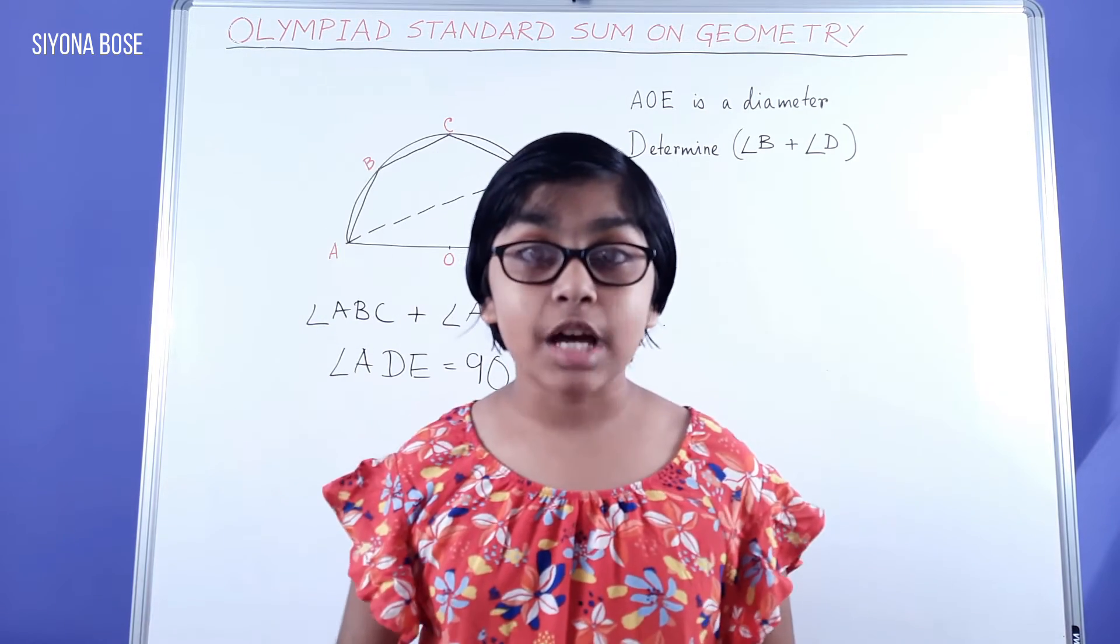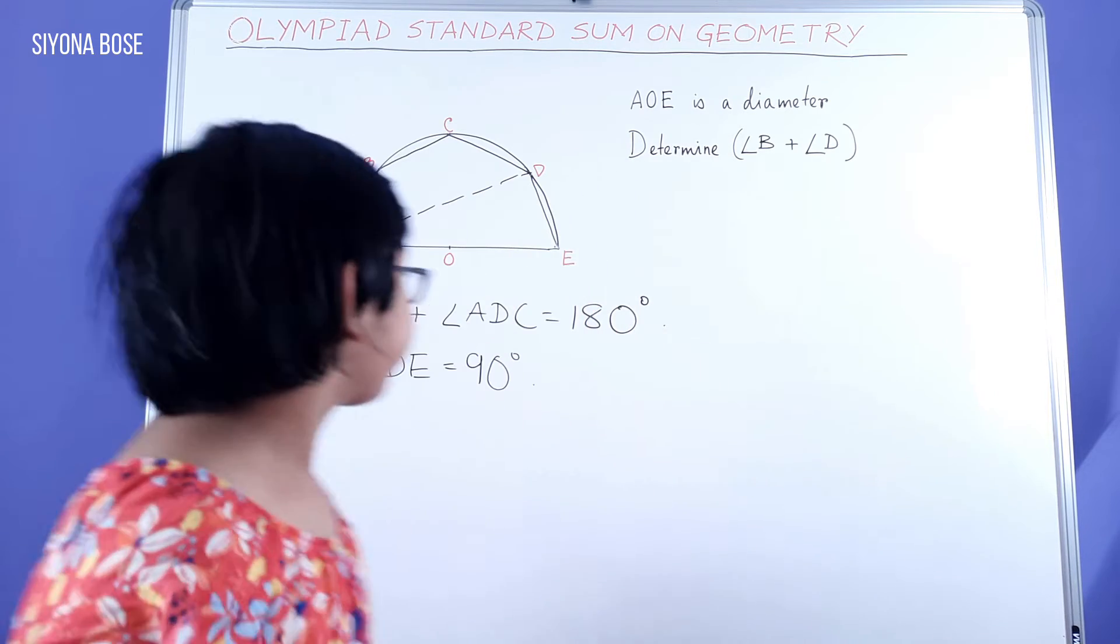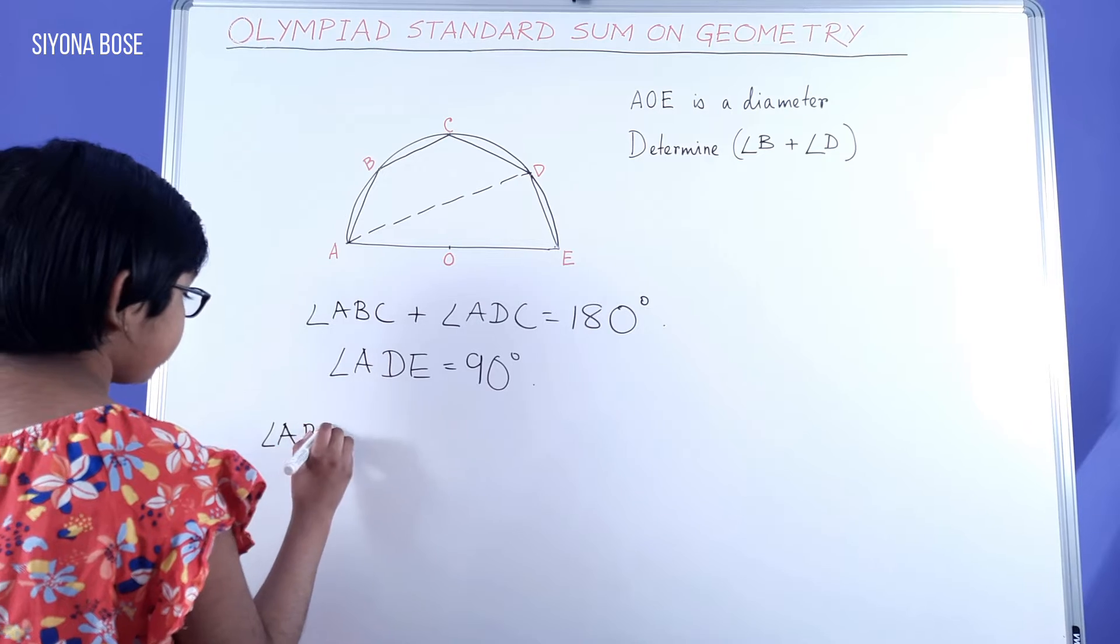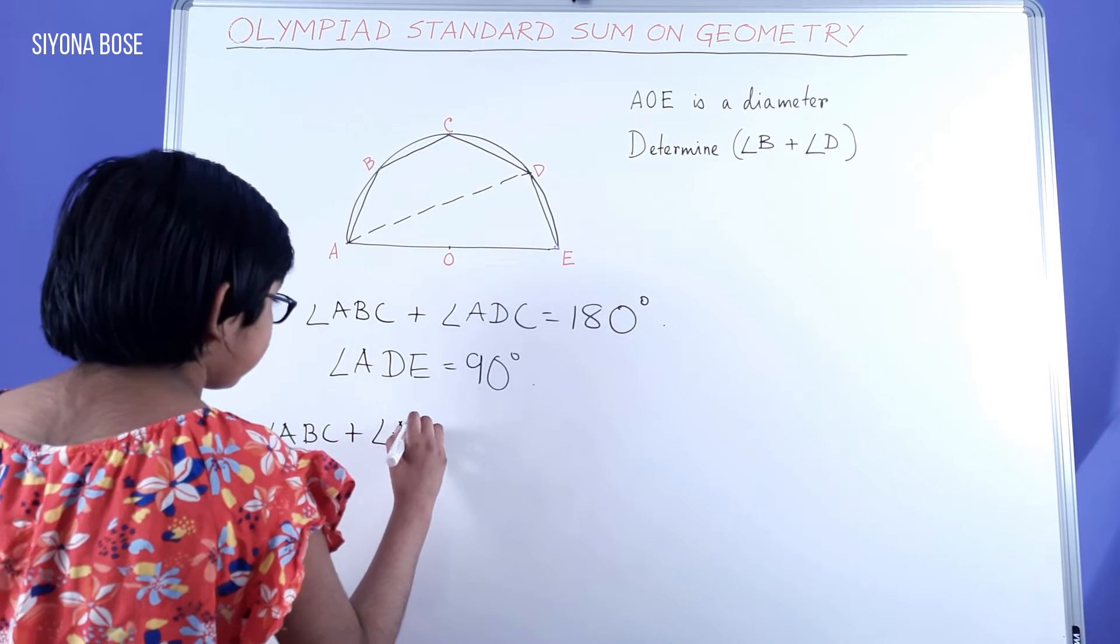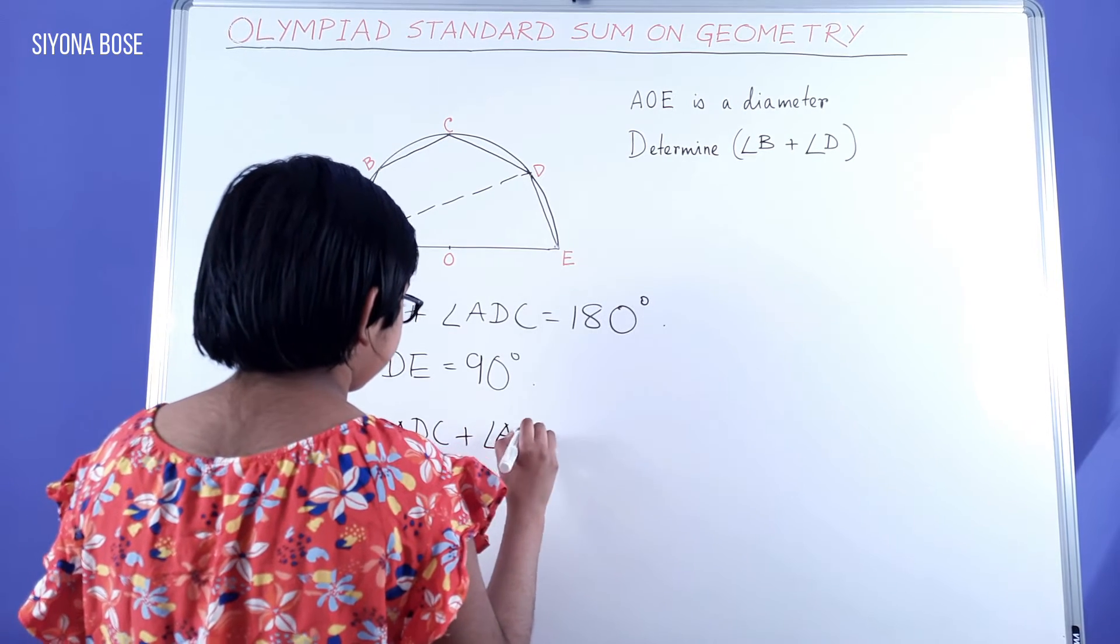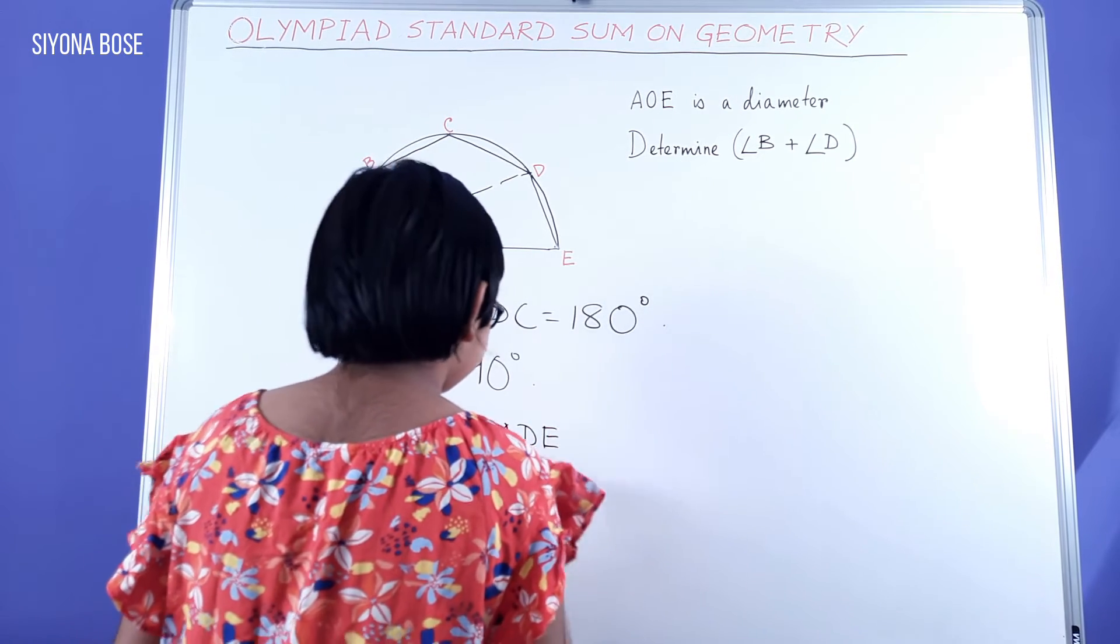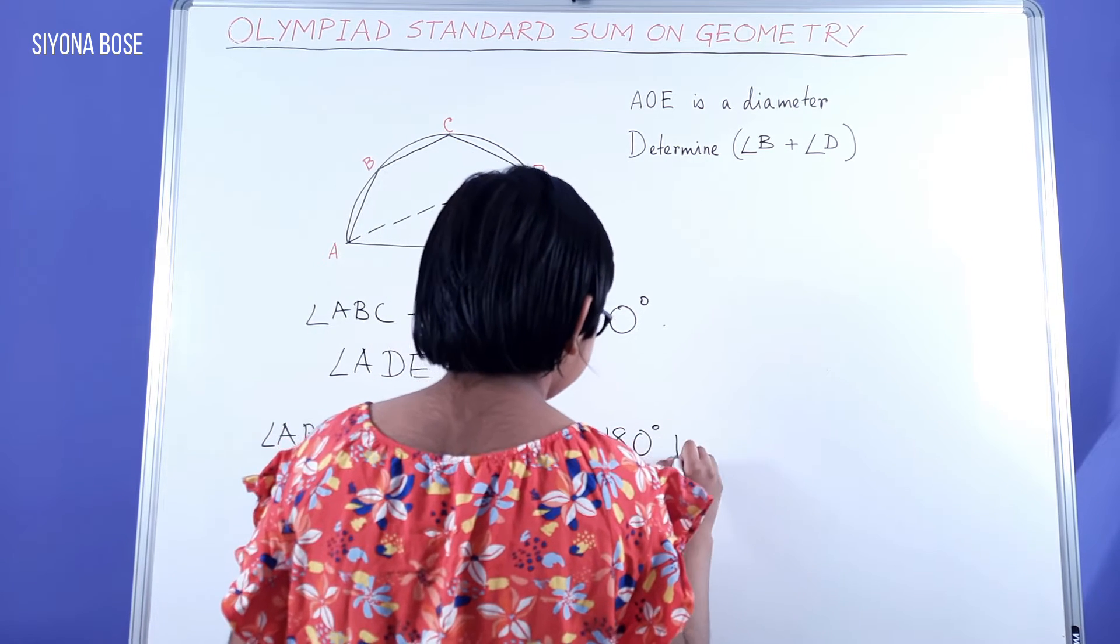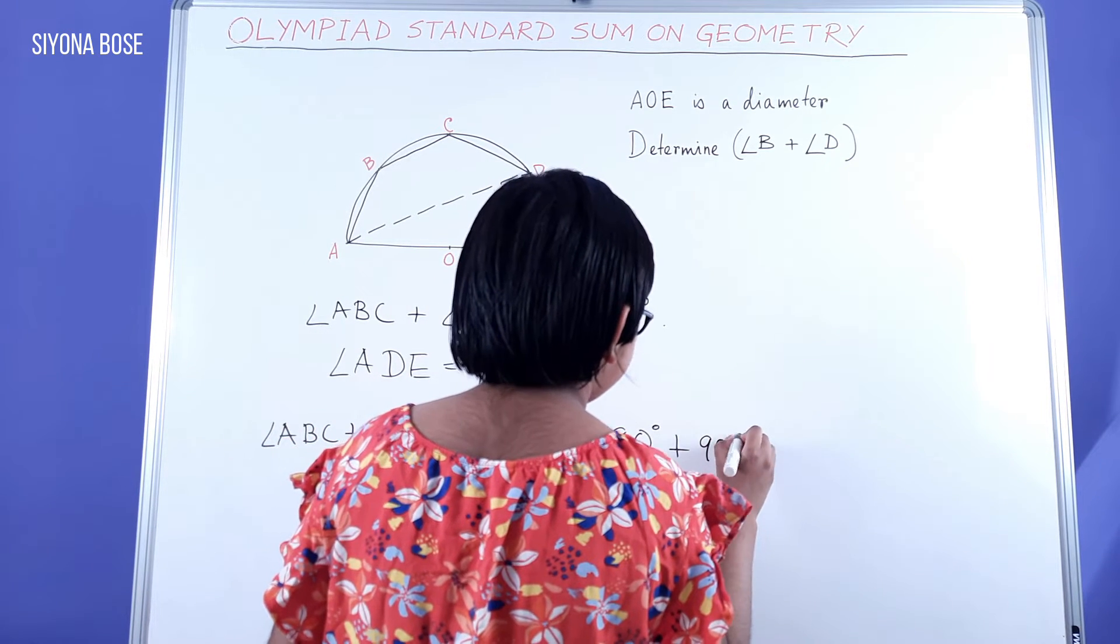Now let's sum up these equations. Angle ABC plus angle ADC plus angle ADE equal to 180 degrees plus 90 degrees.